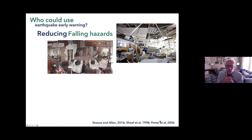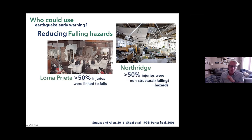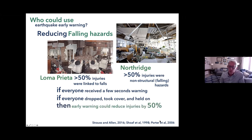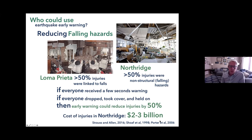Looking at damage from past U.S. earthquakes — the Loma Prieta and Northridge earthquakes — more than 50% of injuries were due to people falling or things falling on people. If everybody has a few seconds of warning and can drop, cover, and hold on, early warning could potentially reduce injuries by more than 50%. The cost of injuries in the Northridge earthquake alone was estimated at $2 to $3 billion, illustrating the real value of earthquake early warning.